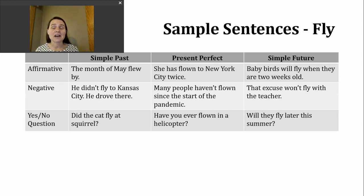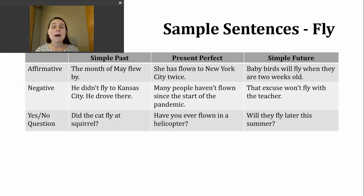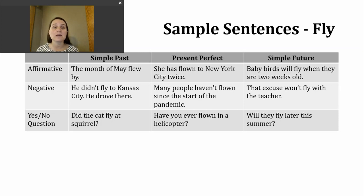Let's keep practicing with the verb fly, but now we'll try a few different verb tenses. Today we'll practice the simple past, the present perfect, and simple future. In the simple past, we're thinking about a definite time in the past when an action was completed. In an affirmative simple past sentence, the verb will always be flew, no matter what the subject is. Here's an example: The month of May flew by — going back to that phrasal verb meaning of passing quickly.